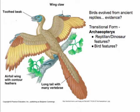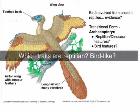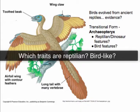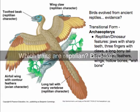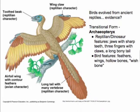If archaeopteryx is truly a transitional form, we should see traits that are reptilian and traits that are bird-like. Which of these traits would you characterize as reptilian, and which as avian? Take a note of these traits and categorize them. Some of the reptilian traits are: a jaw with sharp teeth, three-fingered claws, and a long bony tail — which is what you typically see in reptiles and dinosaurs.